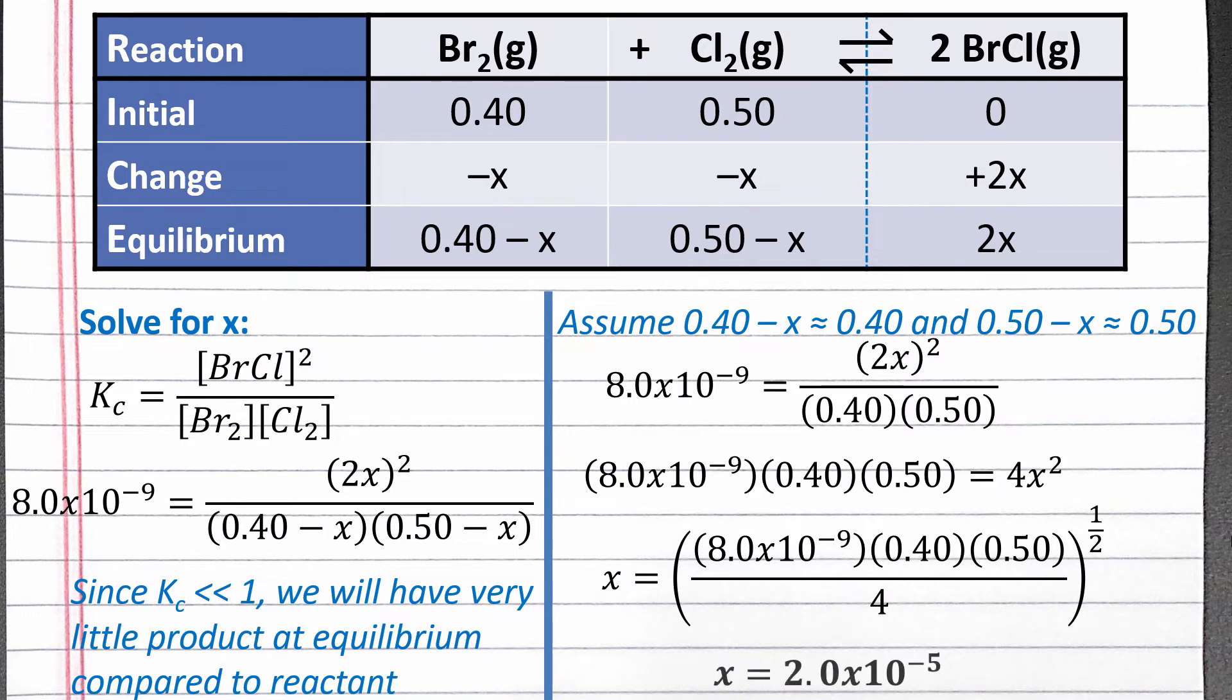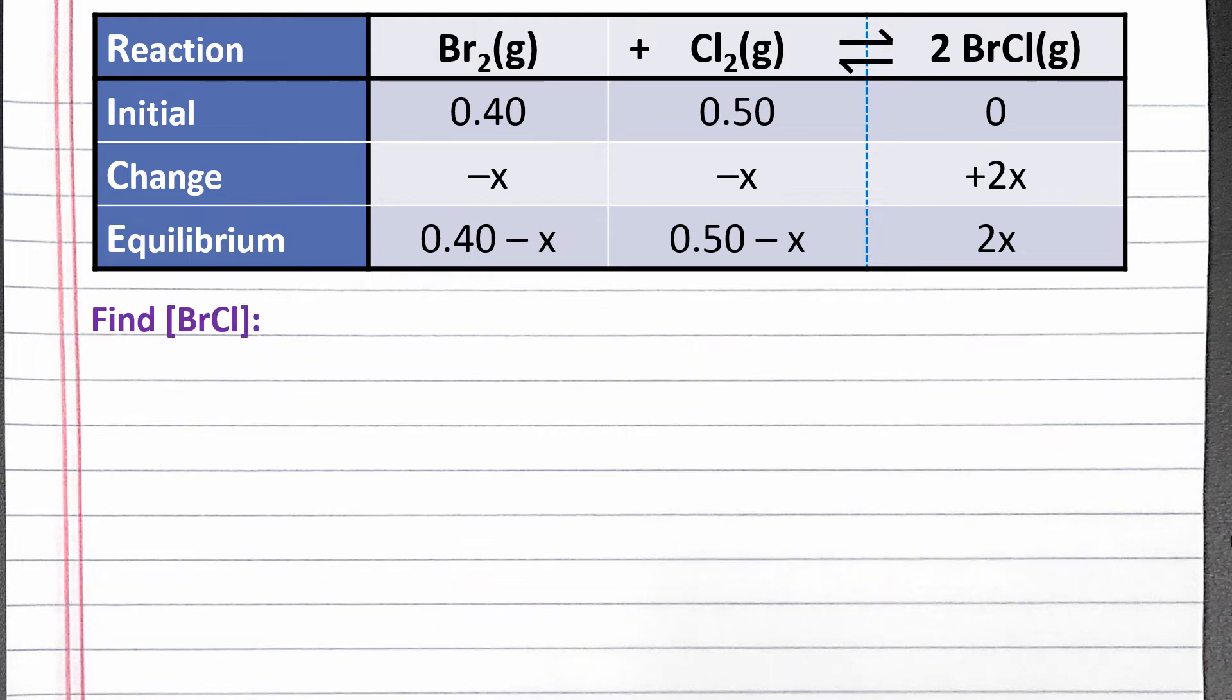Completing this calculation, we should get 2.0 times 10 to the negative fifth for x. Next, we can plug the value of x back into our equilibrium row to solve for the concentration of BrCl gas. We should get 4.0 times 10 to the negative 5 molar, which should be our answer to this problem.